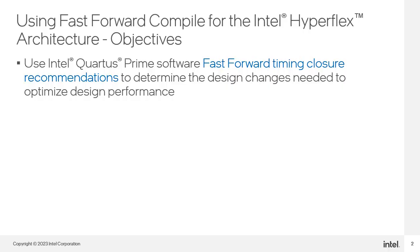Fast Forward Compile is a feature in the Quartus Prime software to help you optimize an Intel FPGA made with the HyperFlex architecture. By the end of this online training, you will understand how to use this Fast Forward Compilation feature to determine the specific design modifications you can make to your design that will result in improving your design performance.